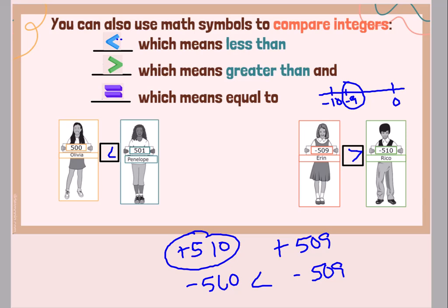So let's practice. We can use the number line here to help us if we need to. And we're going to use our inequality symbols, our less than, our greater than, and our equal to. Okay, positive 1 and negative 4. That one's easy. Positive numbers are always larger than negative numbers. So 1 is greater than negative 4.